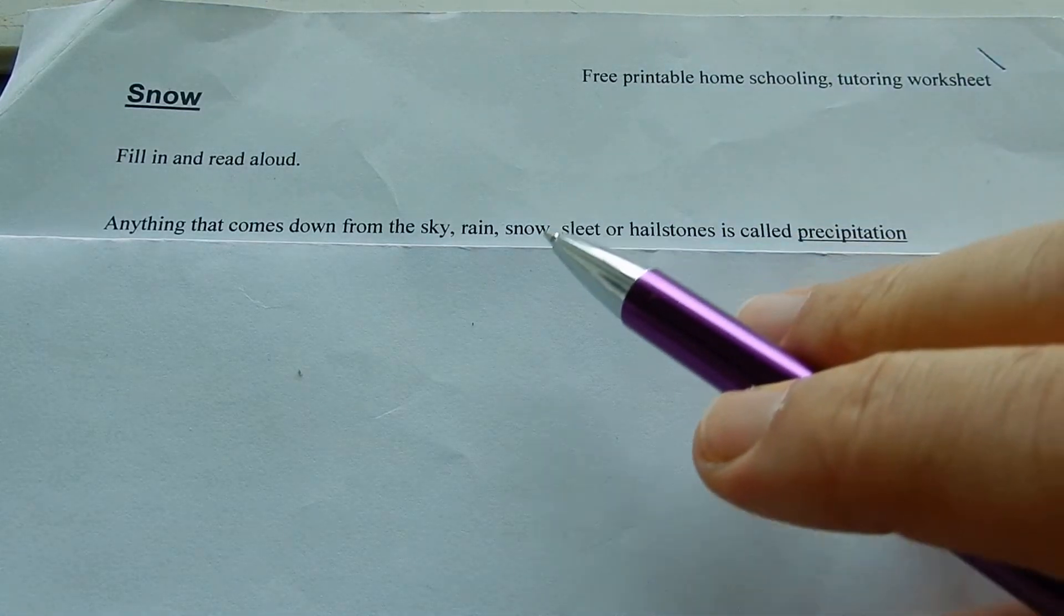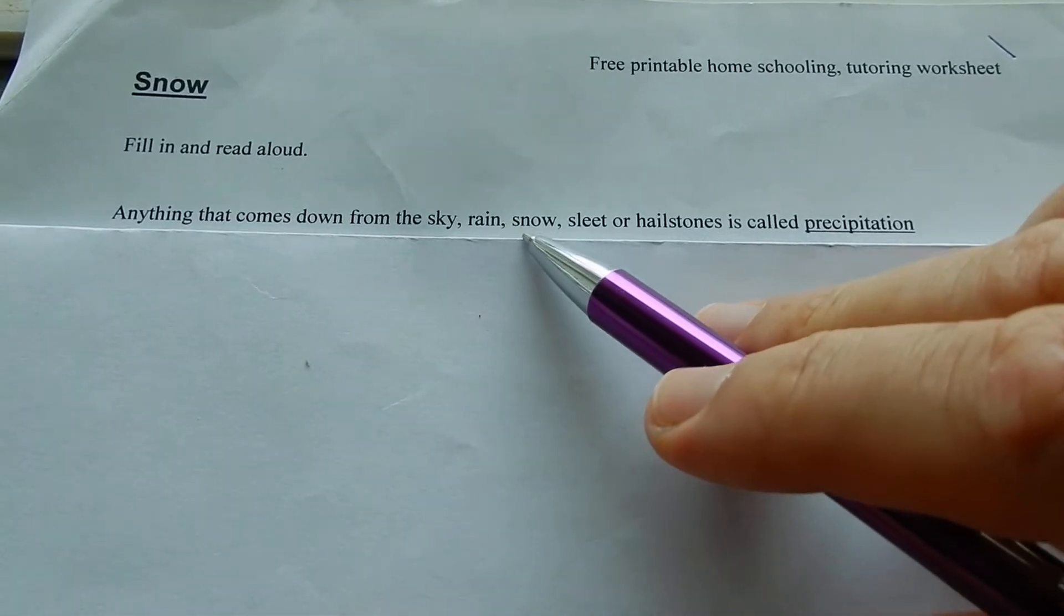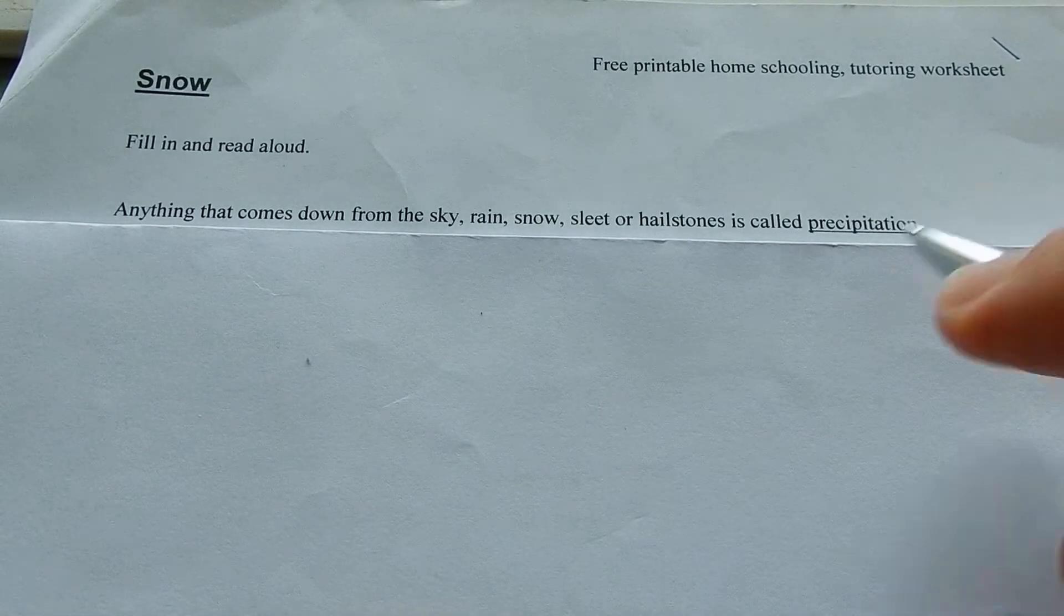Snow! Anything that comes down from the sky—rain, snow, sleet, or hailstones—is called precipitation.